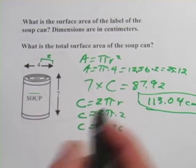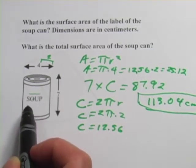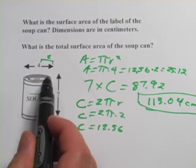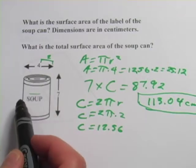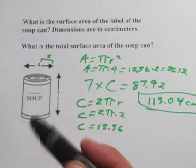So quite a few steps on that one. Label part of the can is a rectangle with one side the height, the other side the circumference of the circle. And then you need to add in the area of the two circles. Let's look at another one.